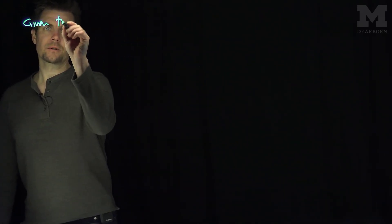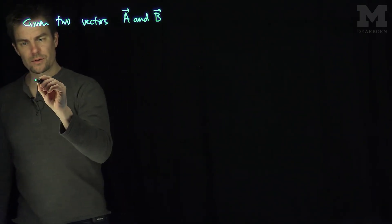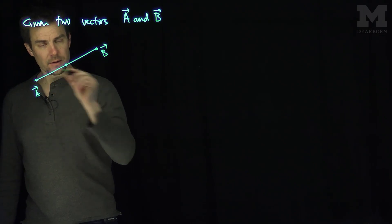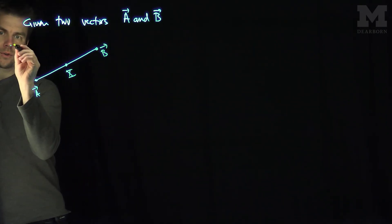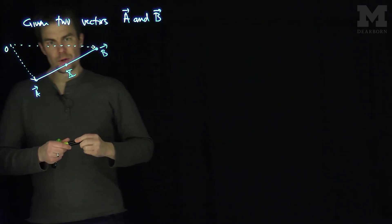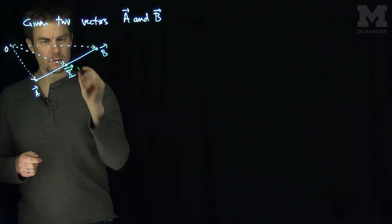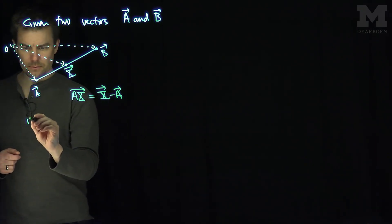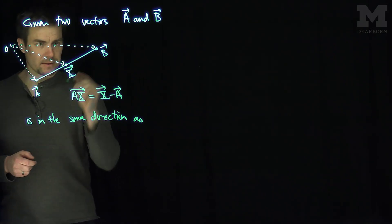Recall that if we're given two vectors A and B, I can look at the line segment between those two vectors. Here's vector B and here's vector A. I'm going to consider a point on the line segment between A and B, visualizing them as vectors with respect to the origin. So I can look at the origin, that's vector A and that's vector B. Here is the vector X — that's the point of division on the line segment. We can notice that the vector from A to X, which is X minus A, is in the same direction as A to B.